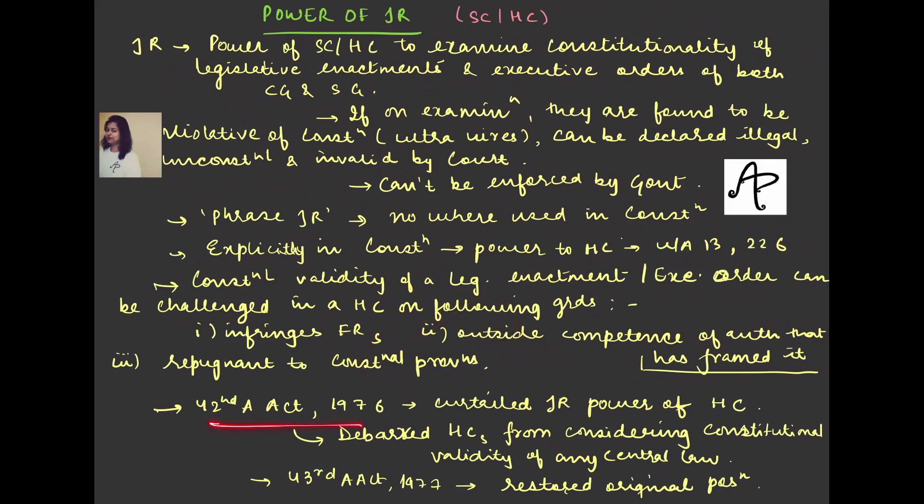Constitutional validity can be challenged in High Court on grounds that fundamental right has been infringed, or it is outside the competence of authority which has framed it, or it is repugnant to the constitutional provisions. The 42nd Amendment Act in 1976 curtailed the judicial review power and debarred the High Courts from considering constitutional validity of any central law. But then the 43rd Amendment Act restored the original provisions. So basically, the present is that they can do this.